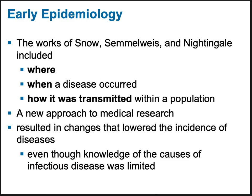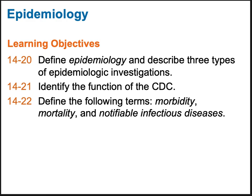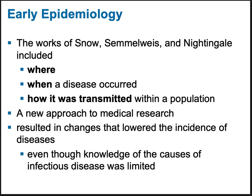Now, epidemiology. Three well-known early epidemiologists are Snow, Semmelweis, and Nightingale. They were researching how diseases are being spread, why they're occurring, and how to prevent them. This was a new approach to medicine, and the results of their work radically changed populations and lowered the incidence of disease — even though they didn't necessarily know the actual infectious agent, they understood patterns and changed behavior causing disease.